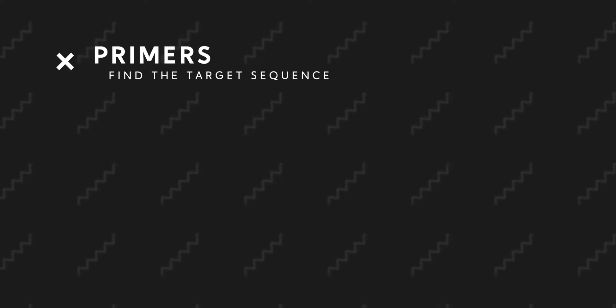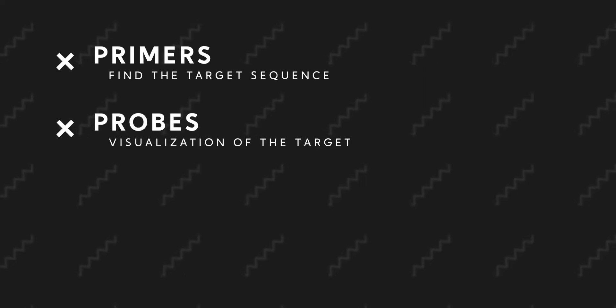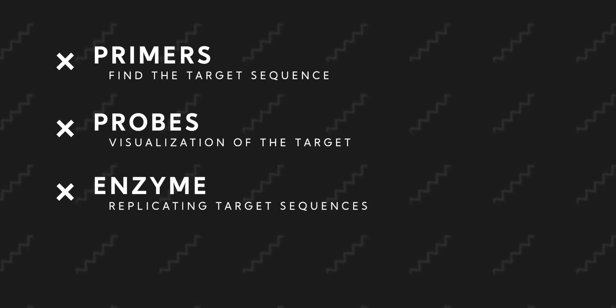The primers are used to find the target sequence. The probes are used for visualization of the target. The enzyme is used for replicating the target sequences. Lastly, the DNTPs are the building blocks for amplifying nucleic acids.